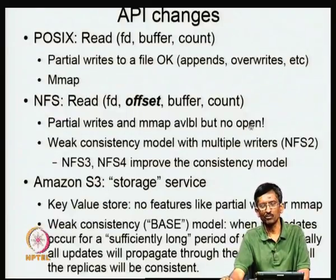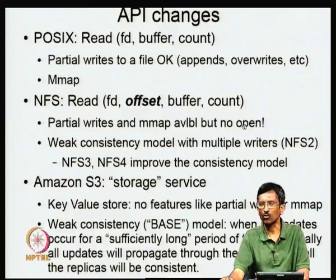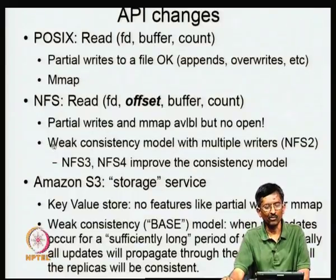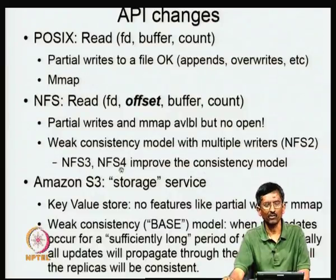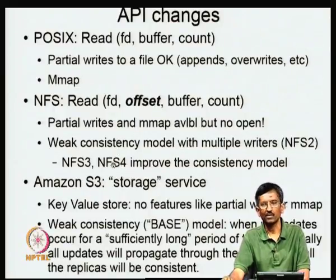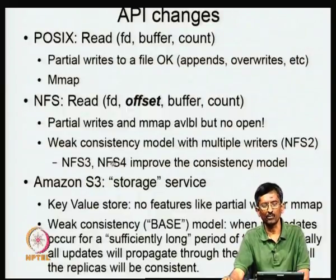However, some things are missing in NFS due to stateless design. For example, there is no open call because the server is not supposed to track which files are open. NFS also has a weak consistency model with multiple writers. Later models like NFS3 and NFS4 improve this — for example, NFS4 has leases, meaning a party wanting to write takes a lease and has exclusive update access until the lease expires.